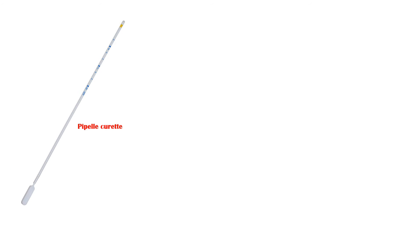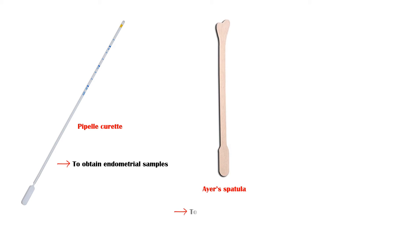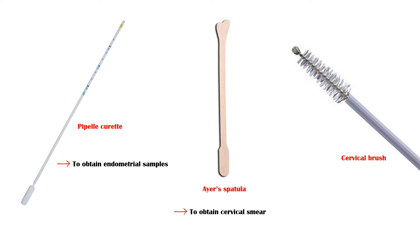Pipel curette is used to obtain endometrial samples. Ayer's spatula is used to obtain cervical smears for the Pap test. Cervical brush has the same use as the Ayer's spatula.